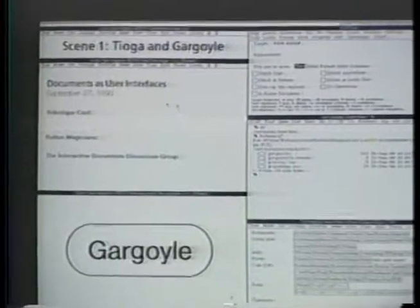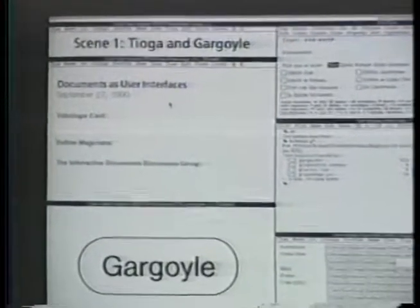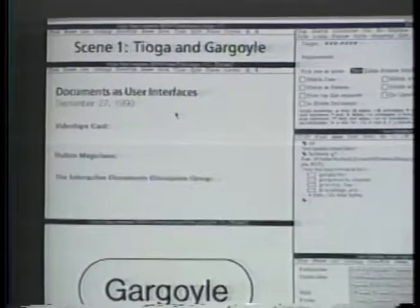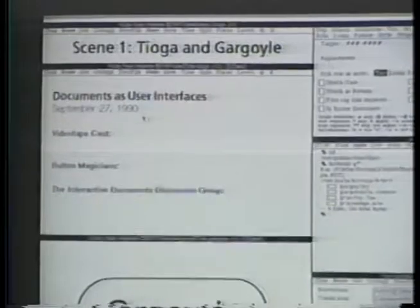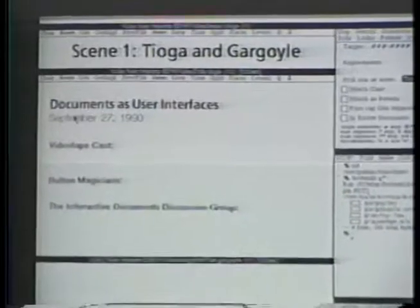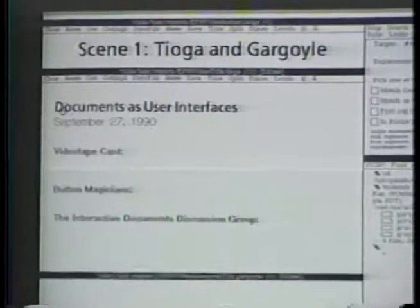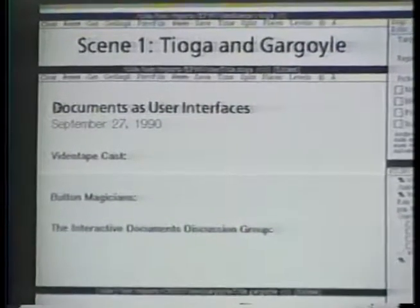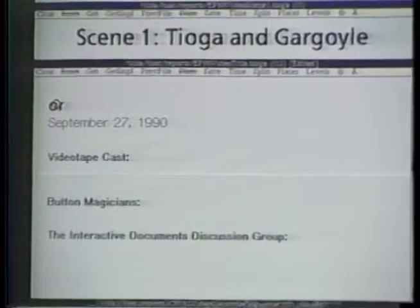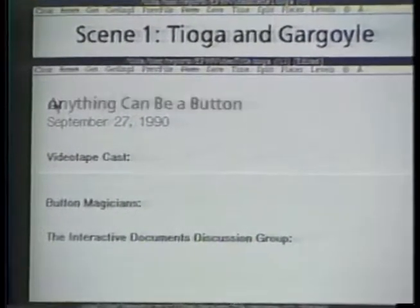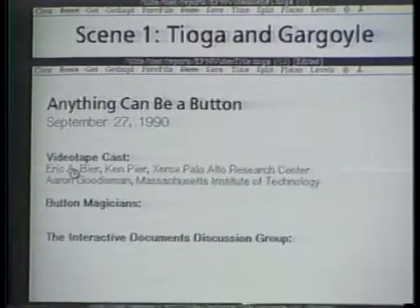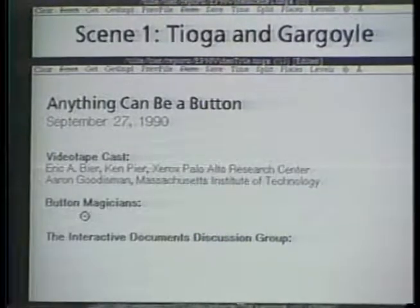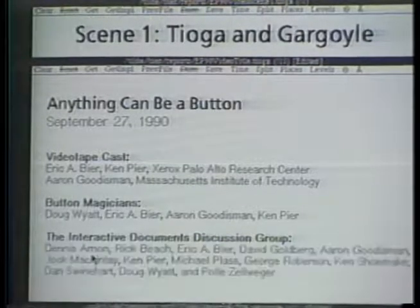Tioga is a WYSIWYG editor for structured documents. It can edit and display sequences of characters with different typefaces, sizes, and other appearance attributes. In this document, several of the paragraphs are buttons that change appearance when pressed.